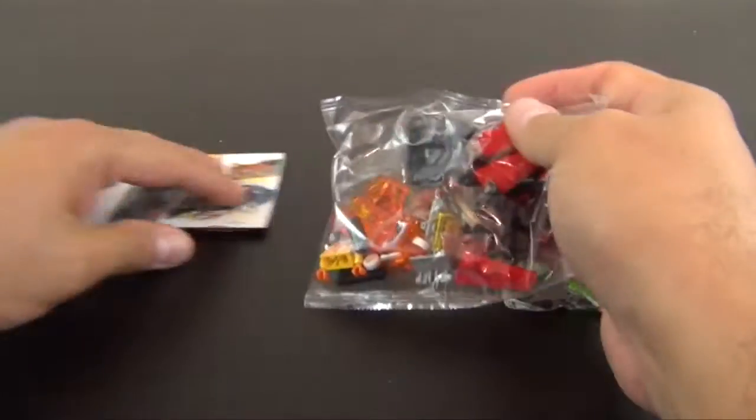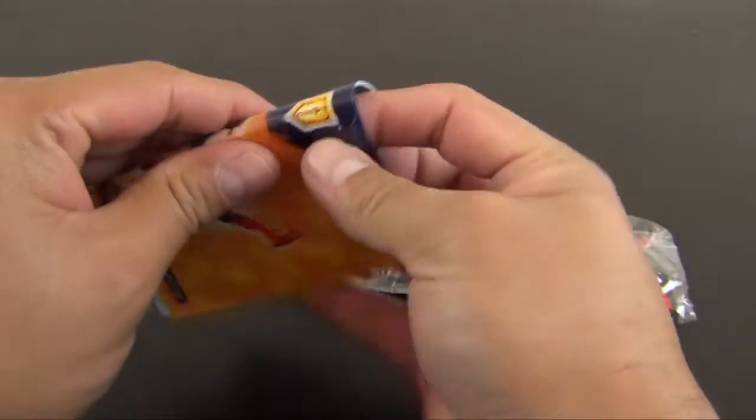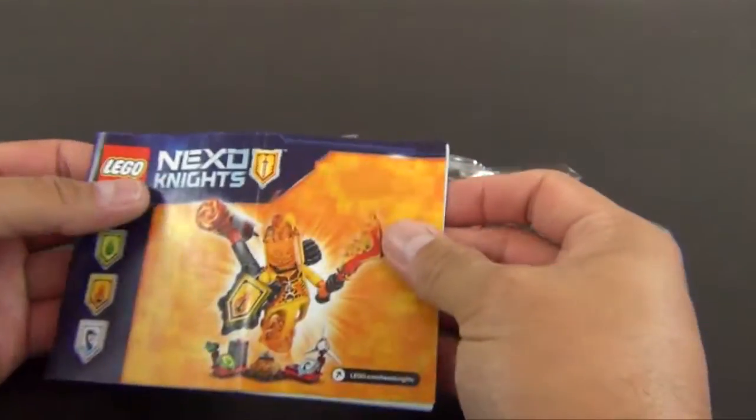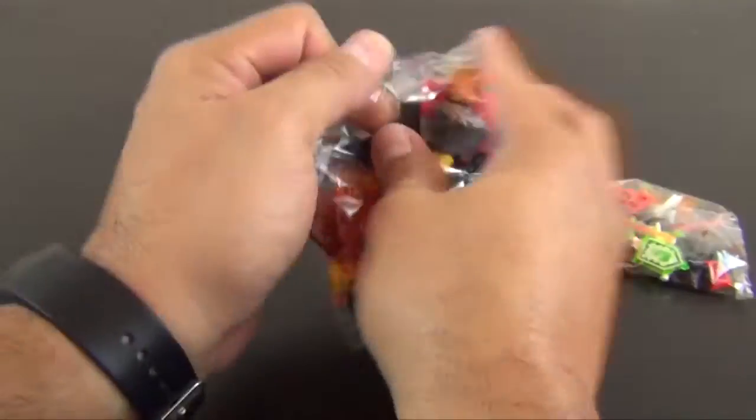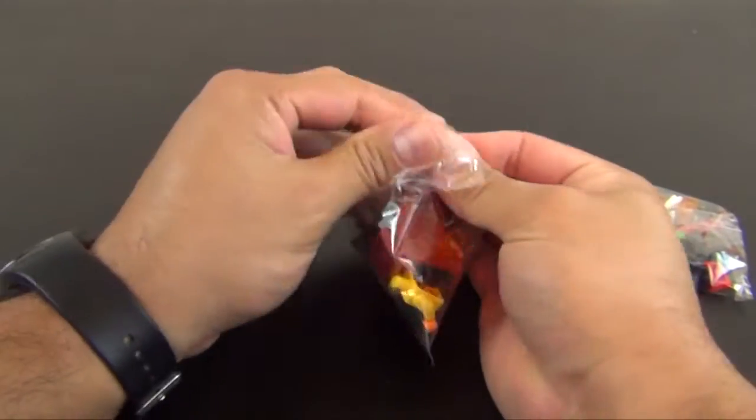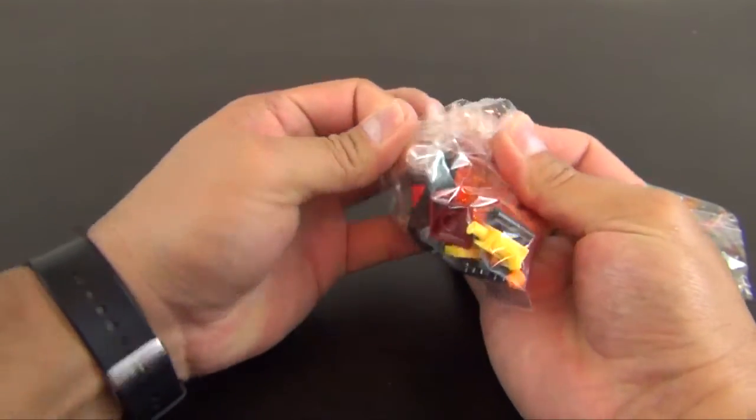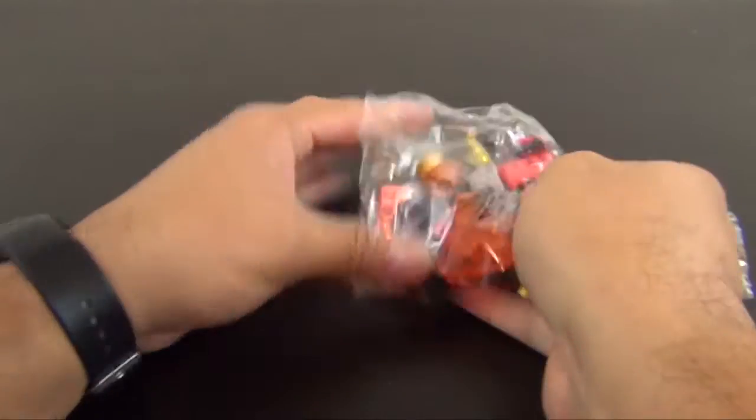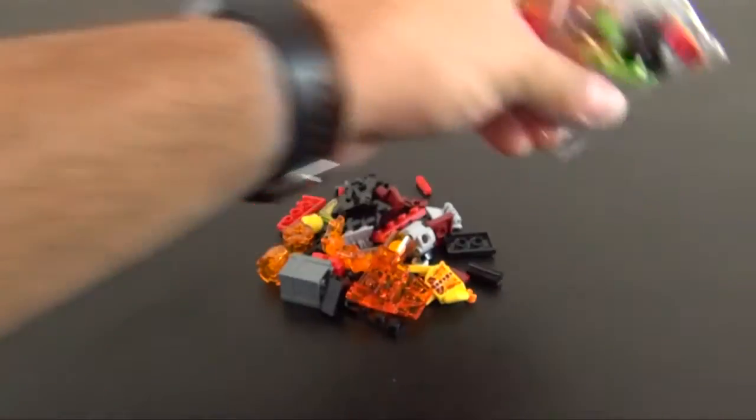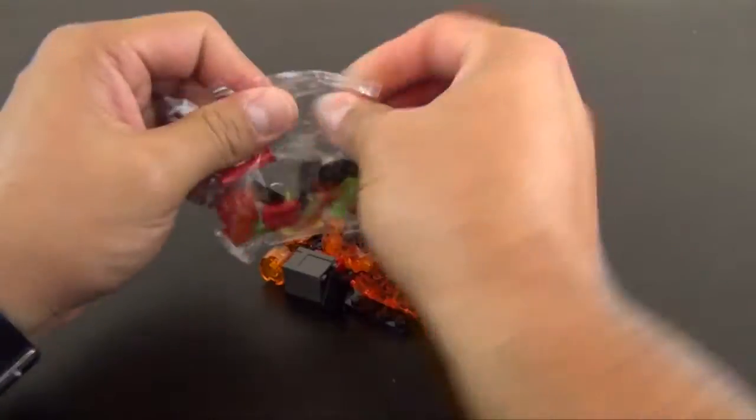So we've got two bags of parts and we've got a single instruction book. Let's fold it in half. There's our big bag of parts and here's our small bag.